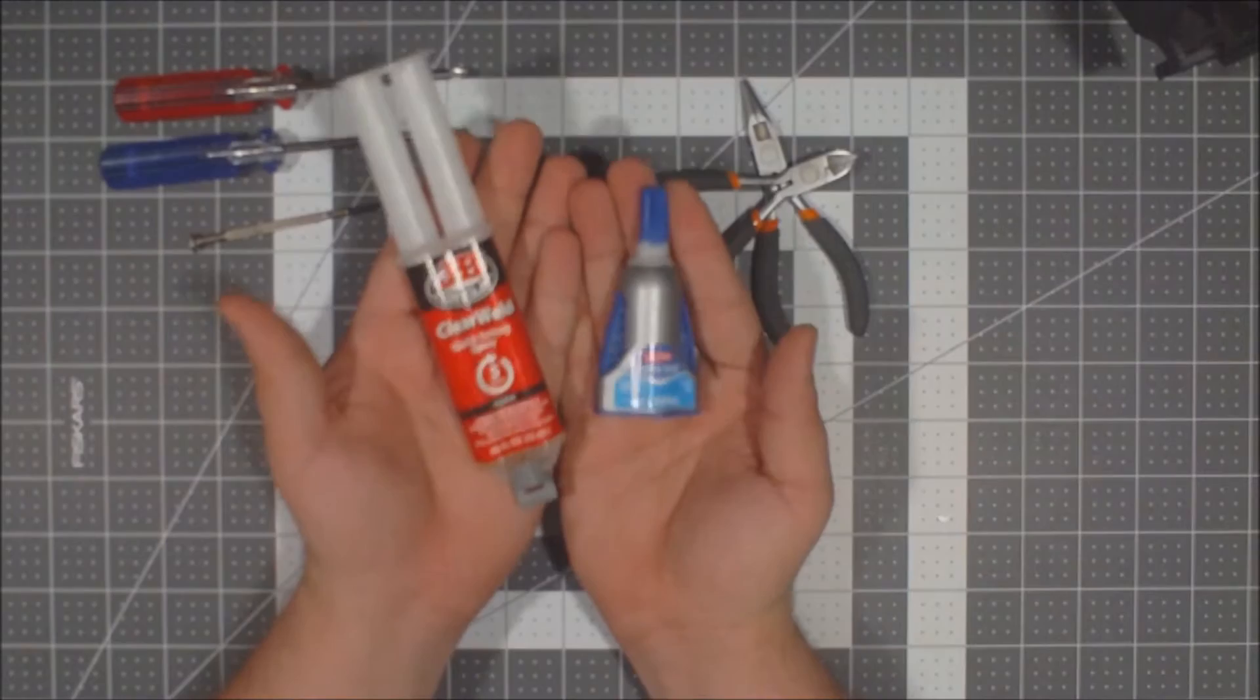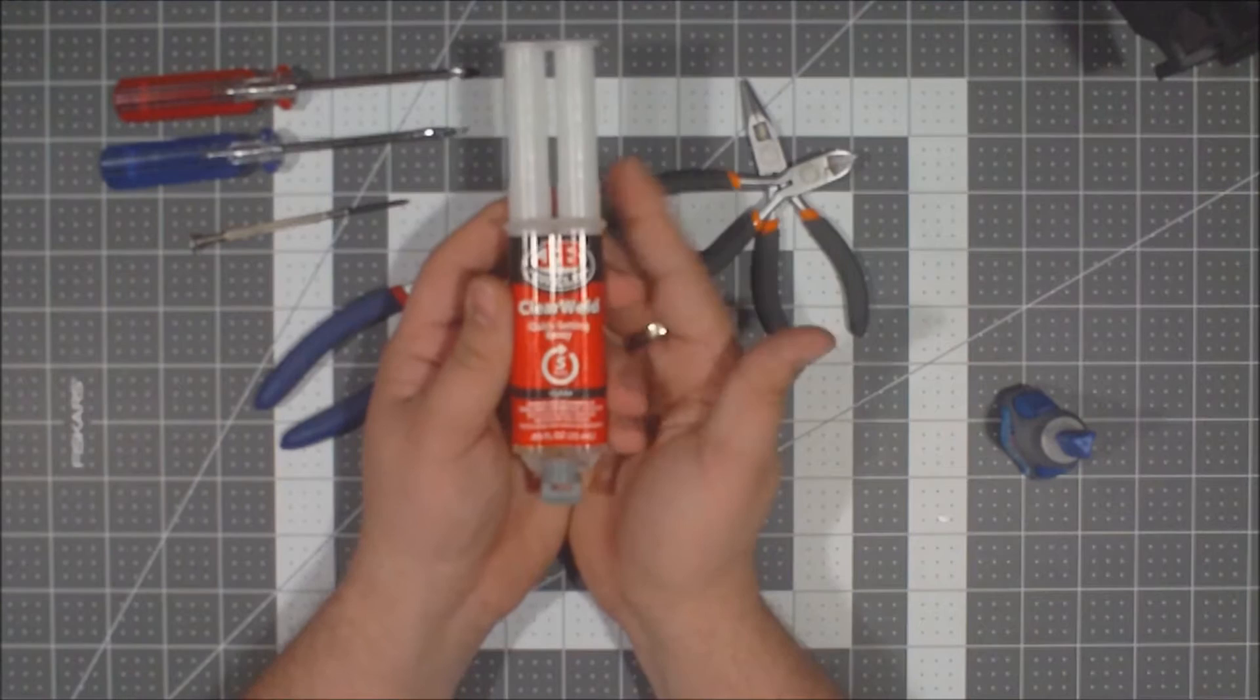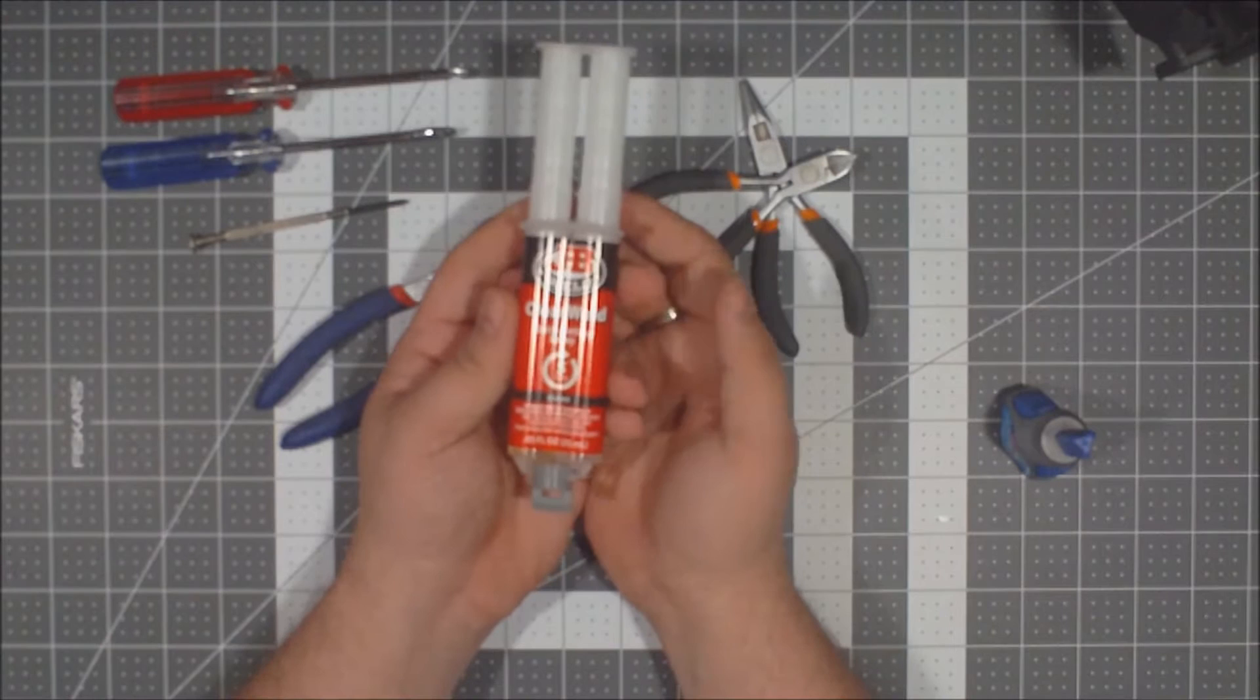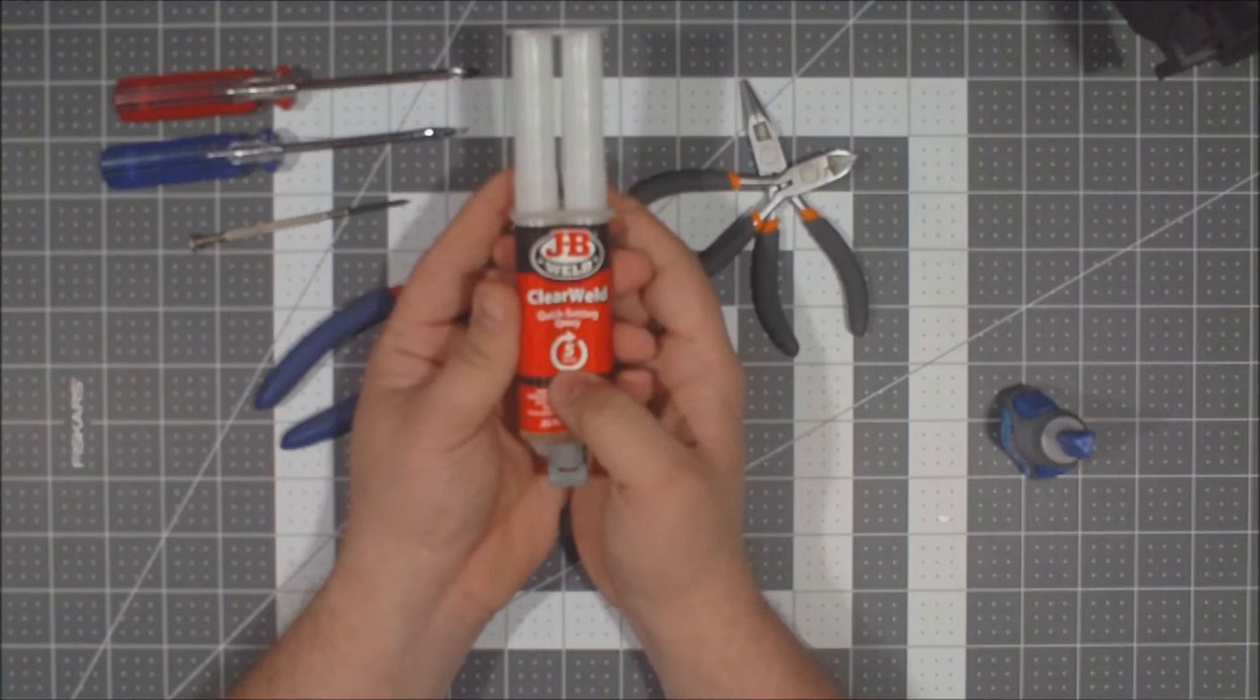Next thing is adhesives. Now, I have two adhesives here and these are two that I always use. We have, first, epoxy, clear epoxy. Now, this is JB Weld's quick set five minute epoxy. Now, that doesn't mean that this is ready to, good to go. You can put this on something and then go play with it ten minutes later. The five minutes is for it to quick set.